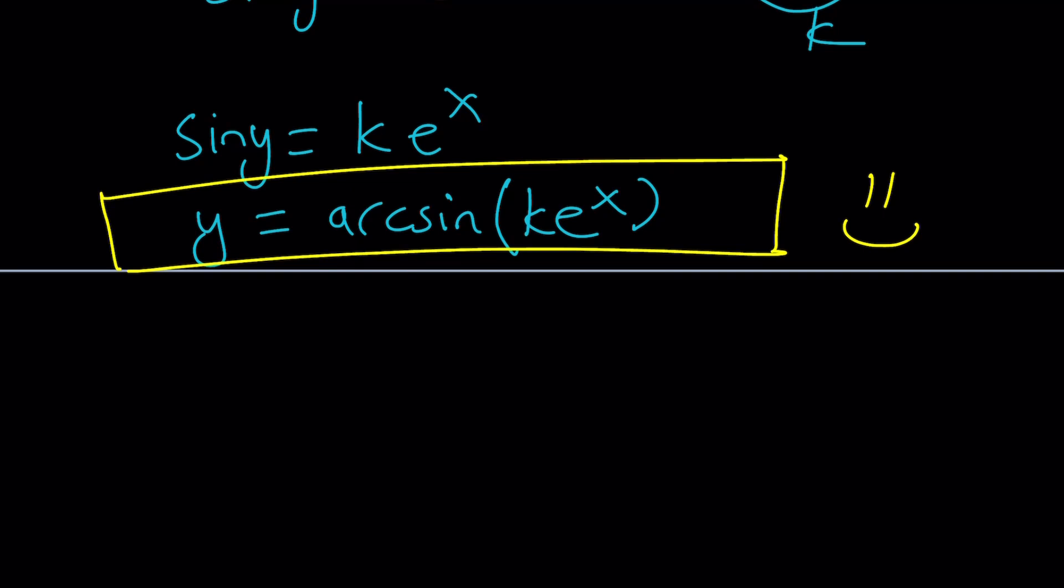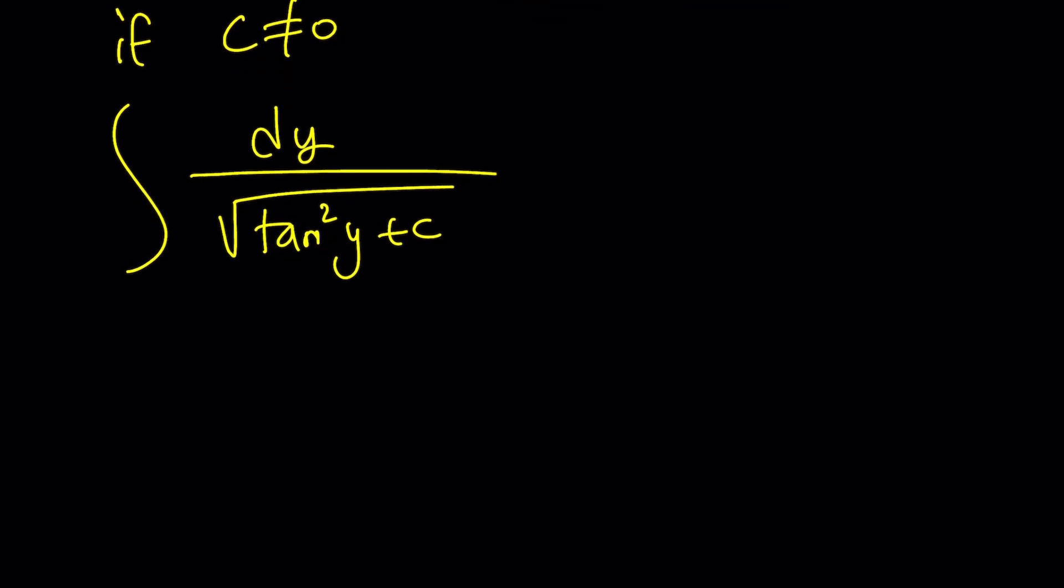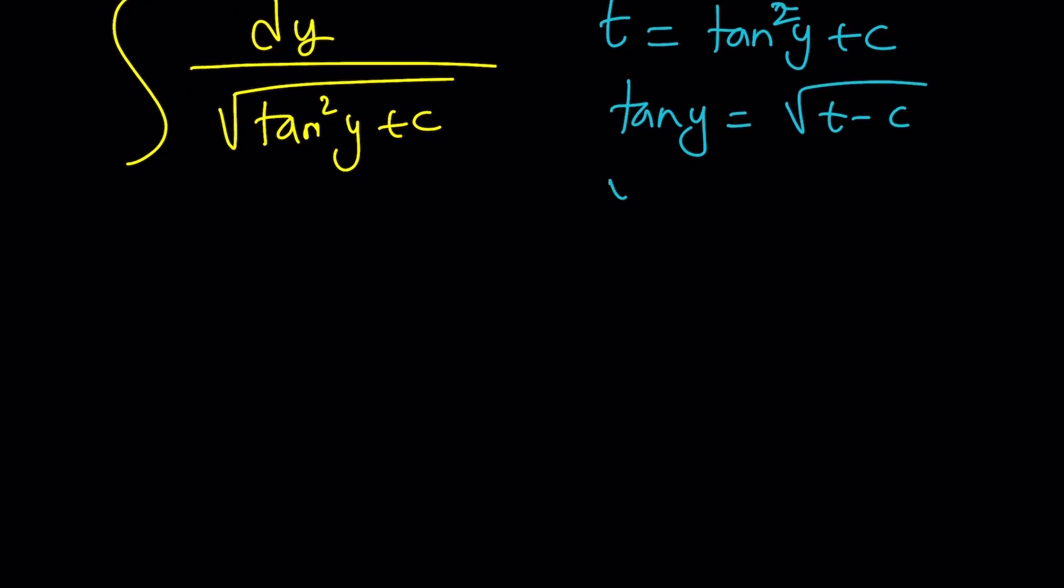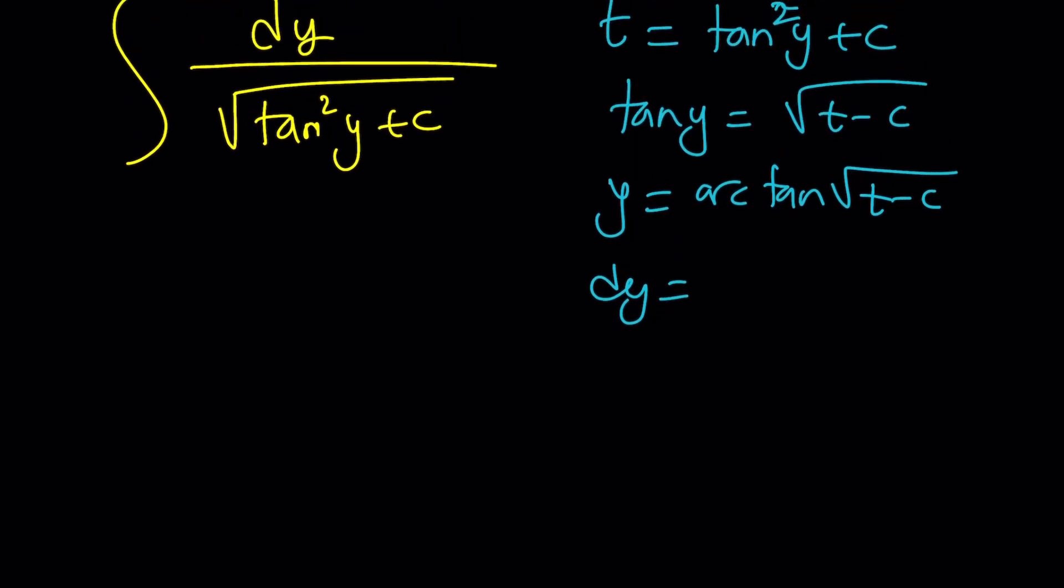So, we got a y value. But it's only for the simplest case, c equals 0. What happens if c does not equal 0? If c does not equal 0, then we integrate this. You could go ahead and set tangent squared y plus c equal to t. And then tangent y can be written as the square root of t minus c. And then we can write y as arc tangent square root of t minus c. And then you could find the dy from here. Hopefully, you can plug it in and find the answer that way. I haven't tried it, but this is for you to work out.